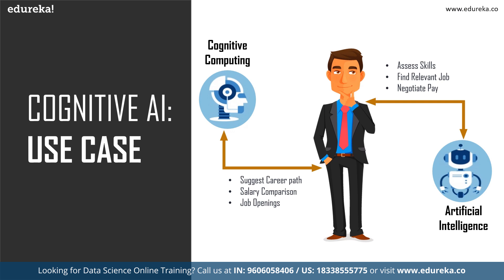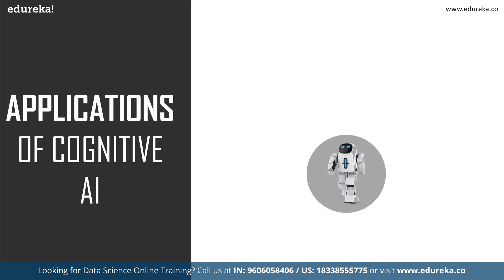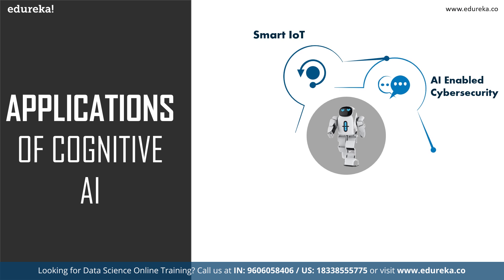Now let's talk about the applications of cognitive AI and how together they make smart technology simpler for us. First is smart IoT, which involves connecting and optimizing devices, data, and IoT infrastructure. Next is AI-enabled cybersecurity — we can fight cyber attacks using data security, encryption, and enhanced situational awareness powered by AI, providing document, data, and network locking secured by an AI key.